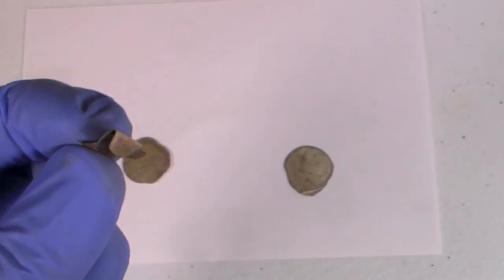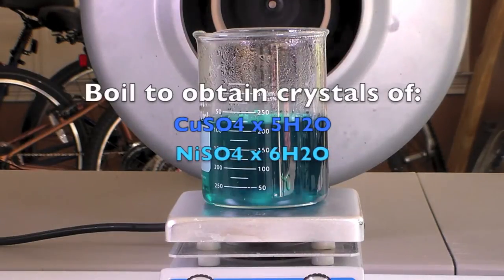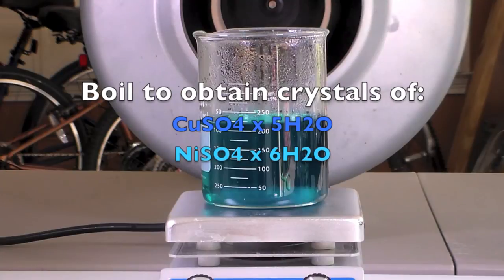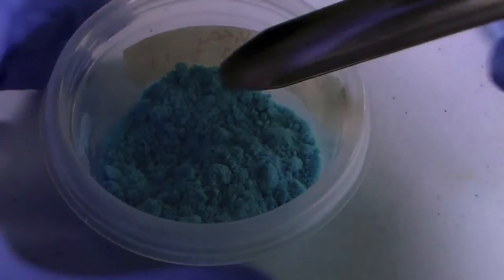This just goes to show the metal-dissolving power of sulfuric acid and hydrogen peroxide. Anyway, this blue-green solution contains both nickel-2 sulfate and copper-2 sulfate. You can boil it down to obtain crystals of copper-2 sulfate pentahydrate and nickel-2 sulfate hexahydrate.